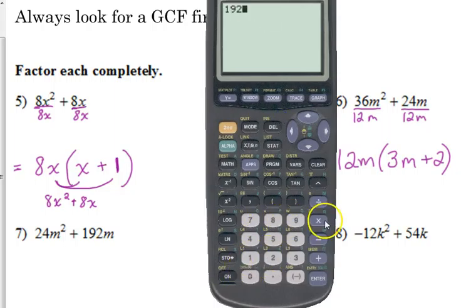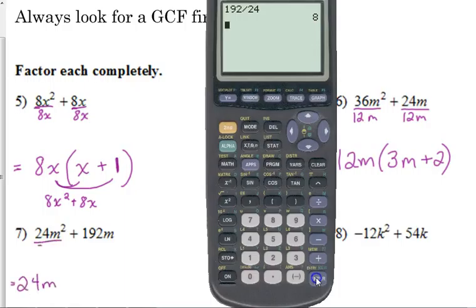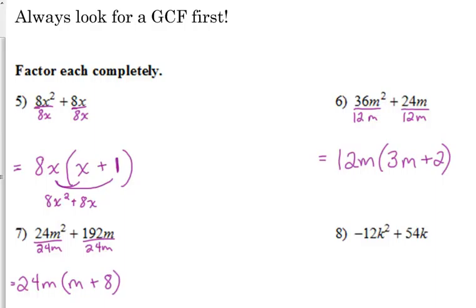All right. Number 7. A little bit bigger numbers, right? I'm not quite so sure about 192. So whenever I'm trying to determine the GCF, I always start with that first coefficient. It would be great if 192 is evenly divisible by 24. And it is. So that was a not so difficult one. 24m is going to be our GCF here. And when we take out that GCF, we are left with m plus 8. 192 divided by 24 is 8.